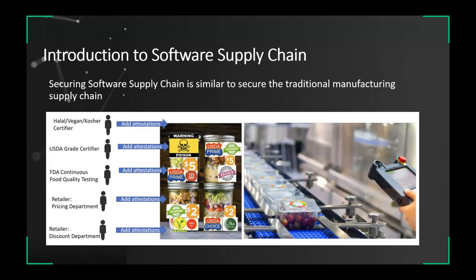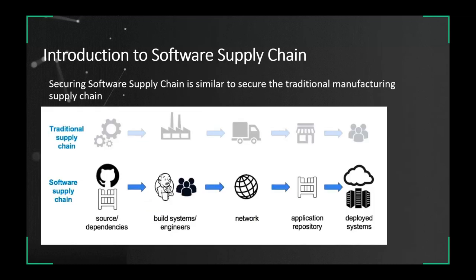It is interesting that securing a software supply chain is similar to securing the traditional manufacturing supply chain. Like the diagram on the left, it includes several rounds of quality check and testing from producing materials to delivering food to customers, ensuring the food is safe enough for market. When comparing the software supply chain with traditional manufacturing, you find it commonly includes producing software based on multiple dependencies, building and distributing artifacts, and then deploying and publishing apps for customers to access.